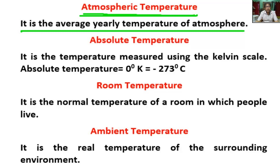Atmospheric temperature is a range of temperature that occurs in the different layers of the atmosphere.